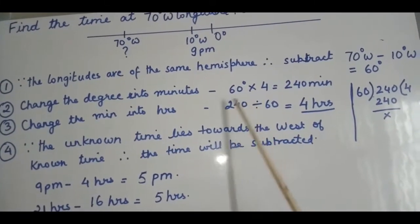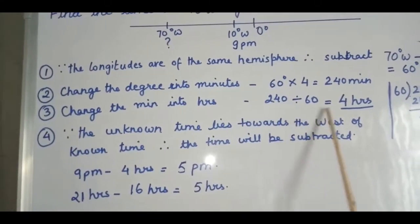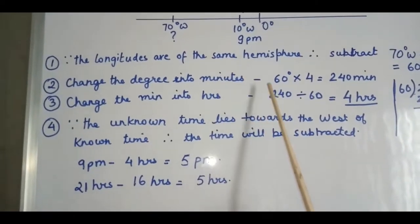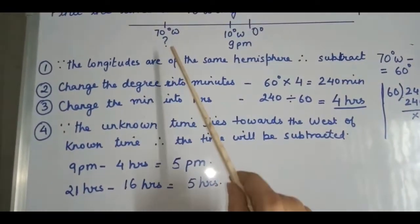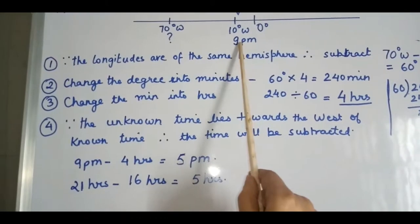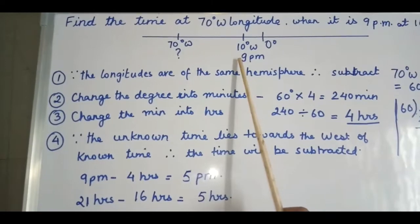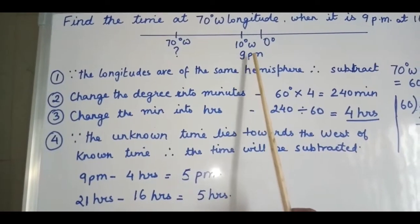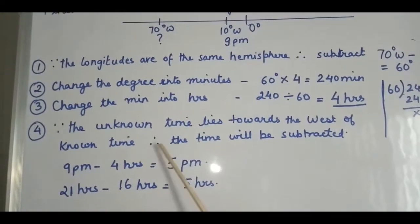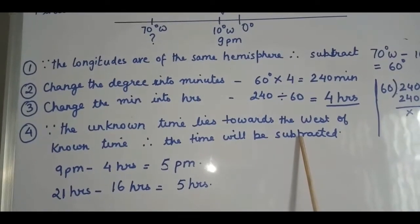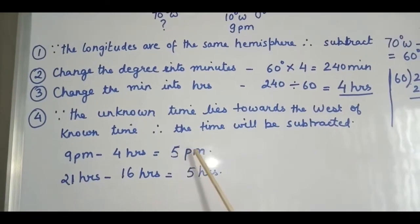This is clear up to this step. The first step requires care, and the second and third are straightforward. For the fourth step: since the unknown time lies towards the west of the known time, we subtract the hours from the known time. So 9 PM minus 4 hours gives 5 PM.